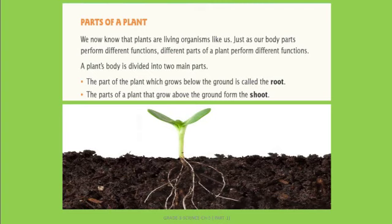A plant's body is divided into two main parts. The first part is the part of the plant which grows below the ground, and that is called the root. As you can see in the given picture, below the ground — under the ground — what is present is the root.